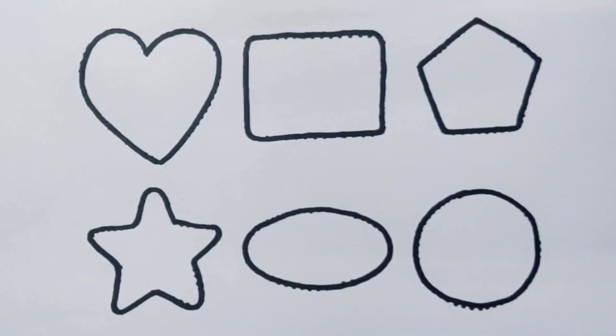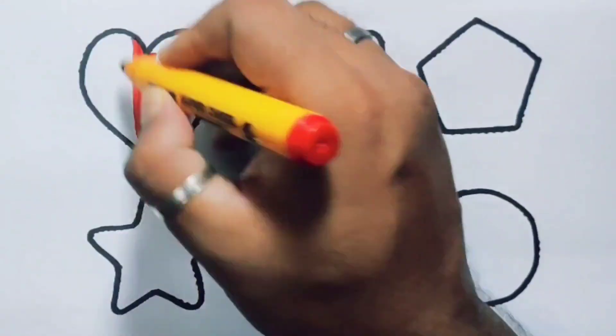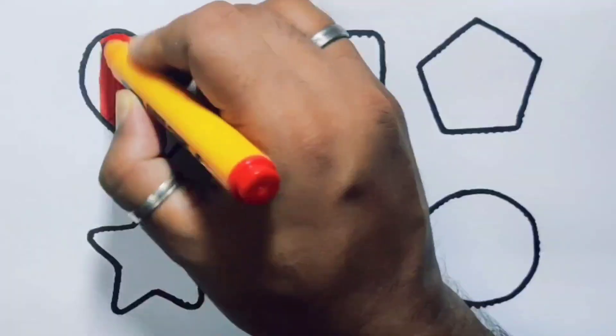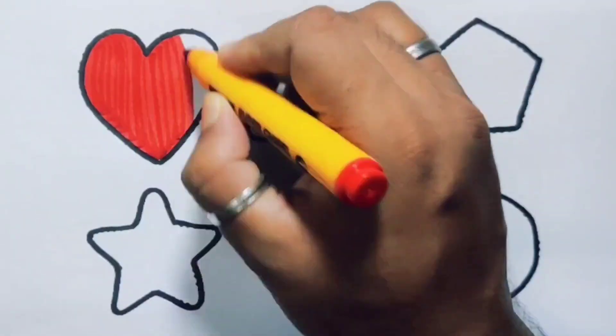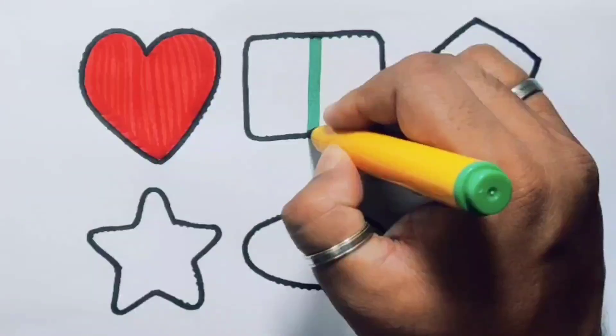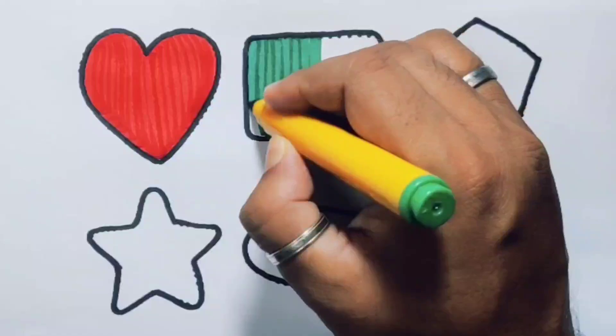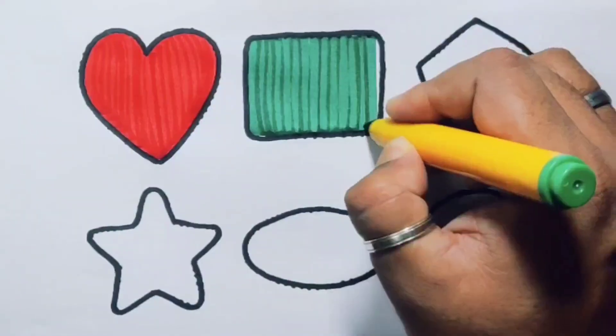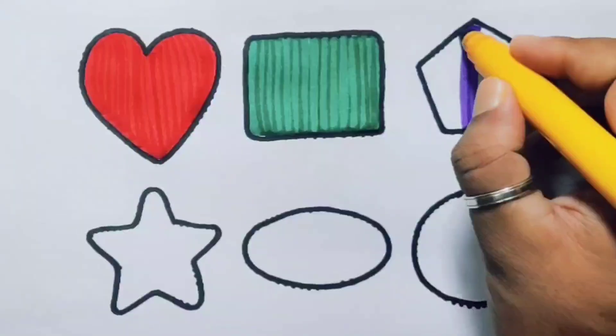...and circle. Now I'm going to color them. Red heart. Green rectangle. Purple pentagon.